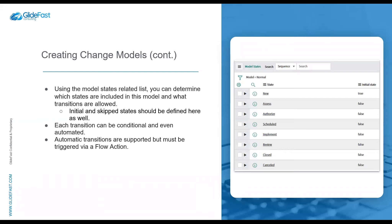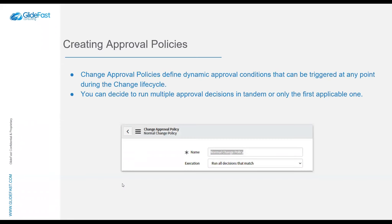You can set up automatic transitions: you could have a state available such as authorized, but make it unavailable for the user to manually select 'scheduled' from authorized — instead forcing it into scheduled once the approval is complete. The only thing to keep in mind about automatic transitions is that they have to be triggered via a flow action called 'Evaluate Change Model.' This action does not exist in the workflow editor — it only exists in flow designer. For almost everything else you could run a workflow in parallel, but automatic transitions rely on that model evaluation activity.